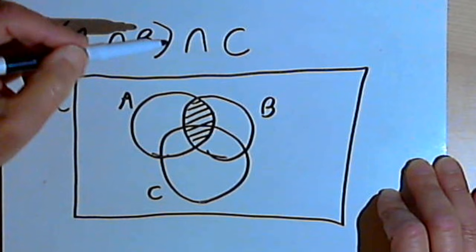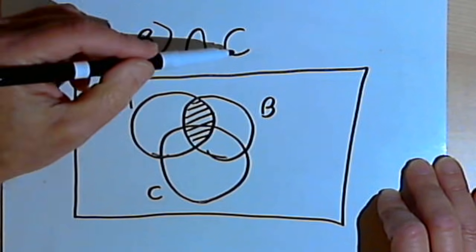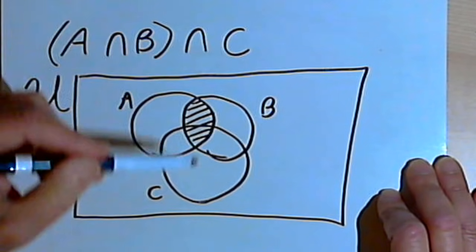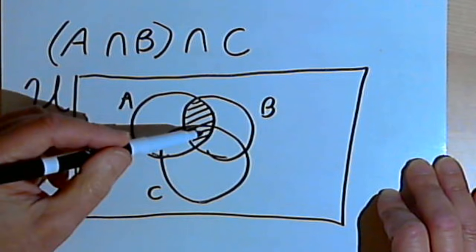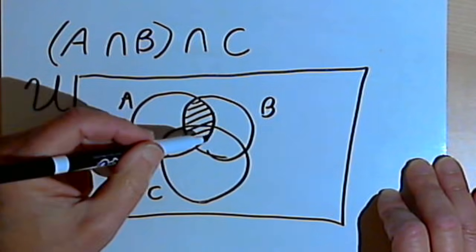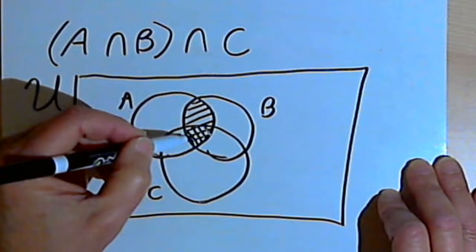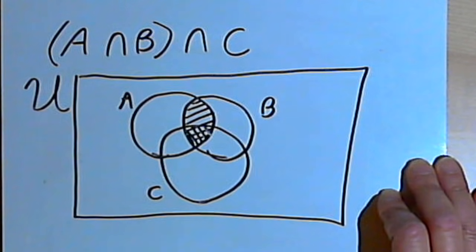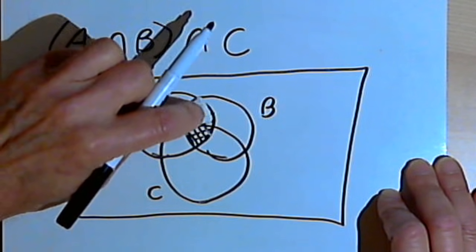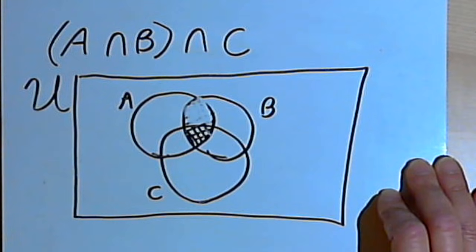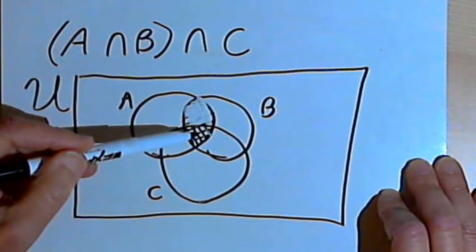Now I want the place where that shaded area intersects with set C. The only place where set C intersects with that shaded area is this one little triangle in the middle of the three sets. I'm going to erase the part I shaded at first, and what I'm left with is this one place in the middle where the three sets overlap.